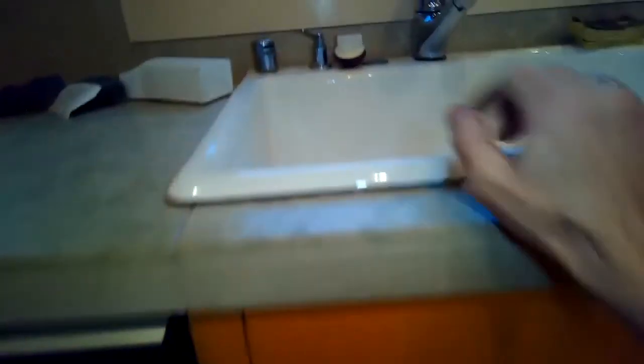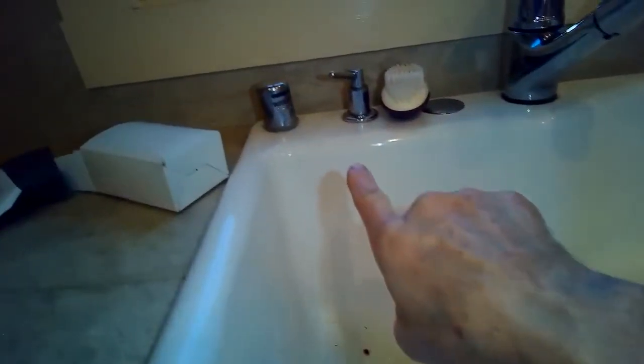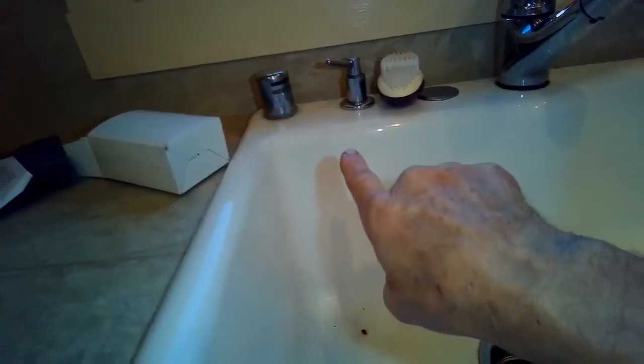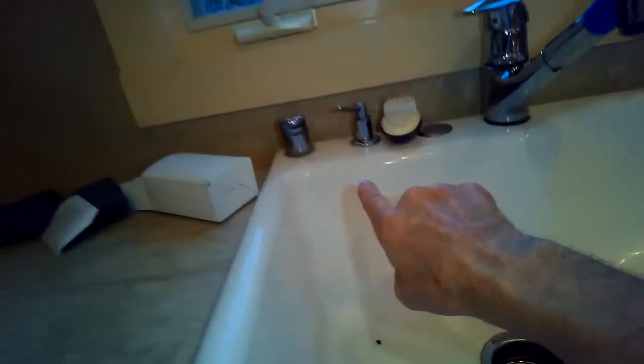So the dishwasher does drain but it doesn't go out where it should. It comes out of this air gap thing here located at the left. And sometimes the water will shoot out, this one kind of dribbles out.